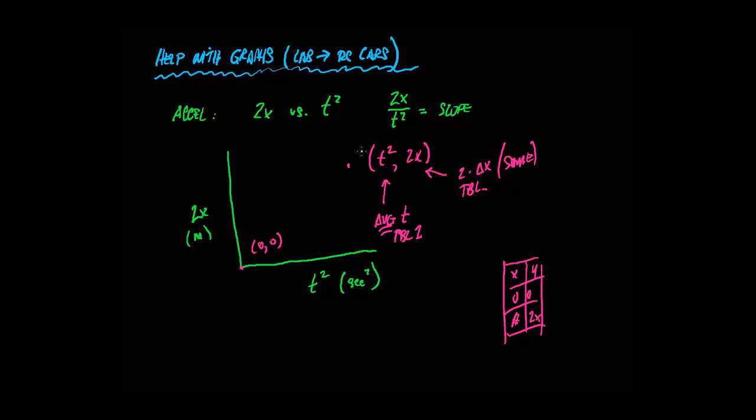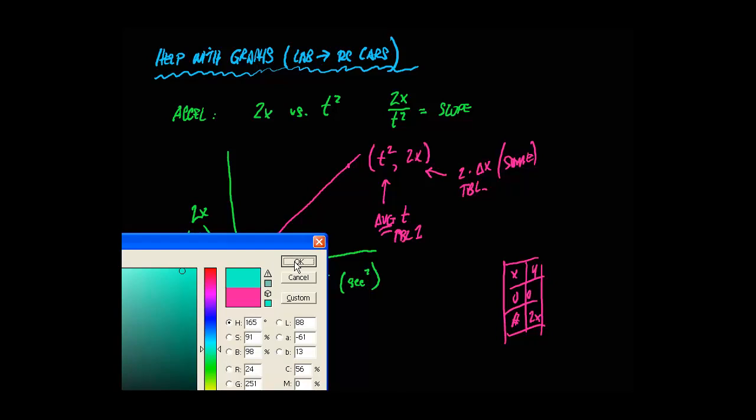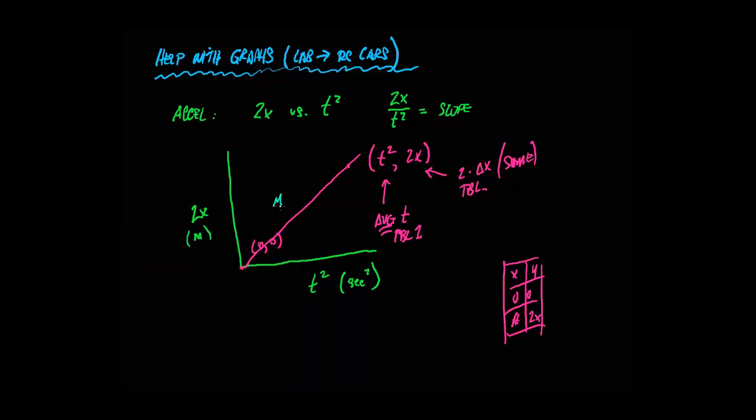And once you have Excel plot that, you're going to ask it to put a curve fit or trend line. And what that's going to do is give you, once you put the curve fit or trend line or ask it to put an equation, it'll say y equals some number times x plus some other number.